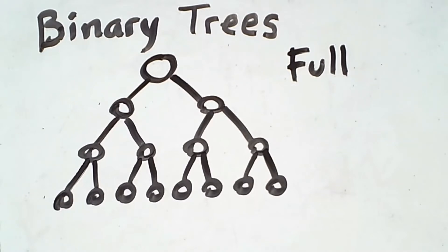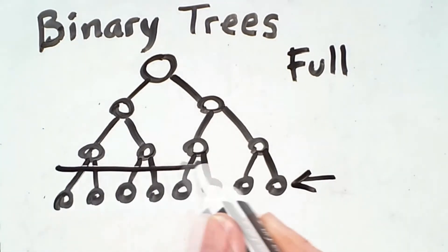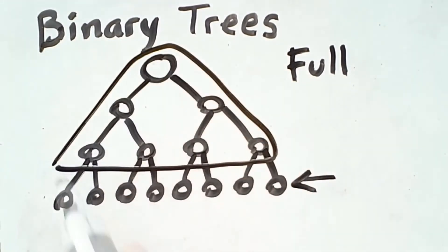When every leaf of a tree is at the same level, and all of the non-leaf nodes have exactly two children, this is known as a full tree.